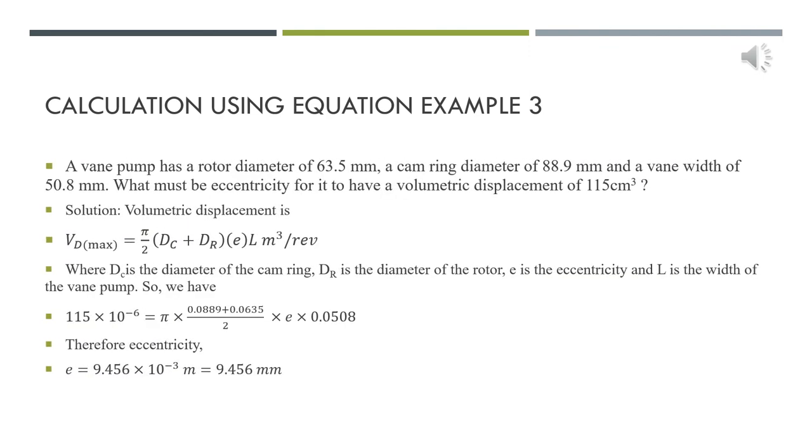Here is one of the calculations using the equation in example 3. A vane pump has a rotor diameter of 63.5 mm, a cam ring diameter of 88.9 mm, and a vane width of 50.8 mm. What must be the eccentricity for it to have a volumetric displacement of 115 cm³? The volumetric displacement equals π/2 times (diameter of cam ring plus diameter of rotor) times eccentricity times width. Now we are going to substitute all the values into the volumetric displacement. Therefore, the eccentricity equals 9.456×10⁻³ m.